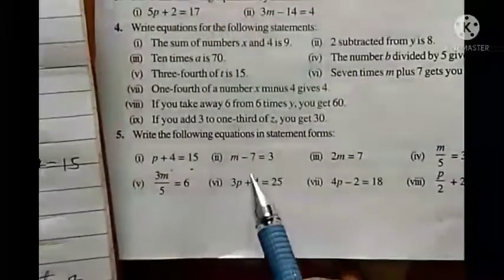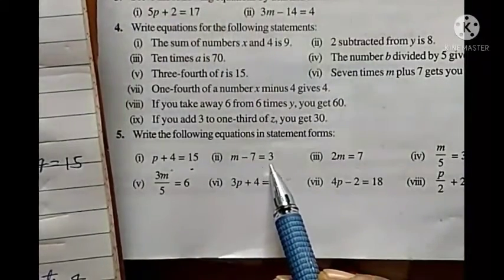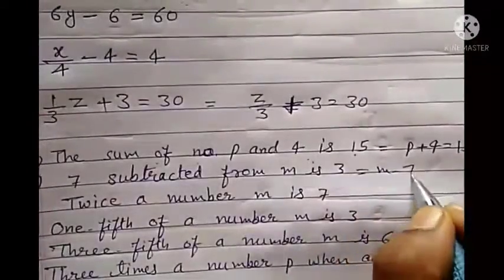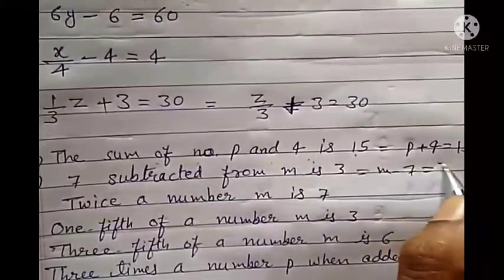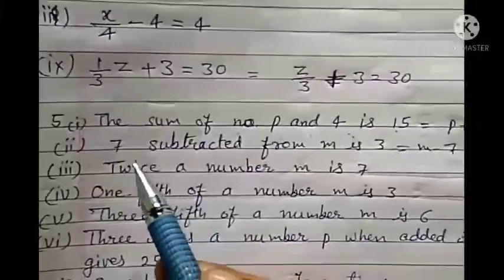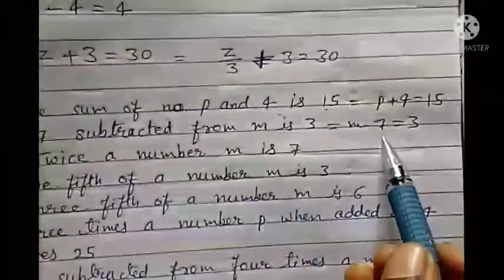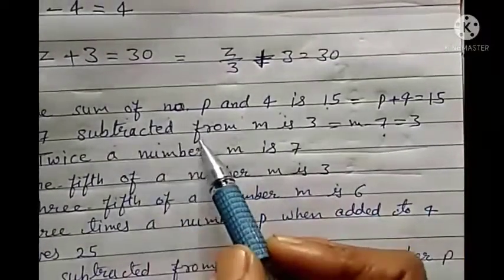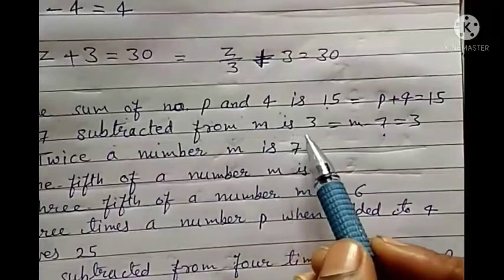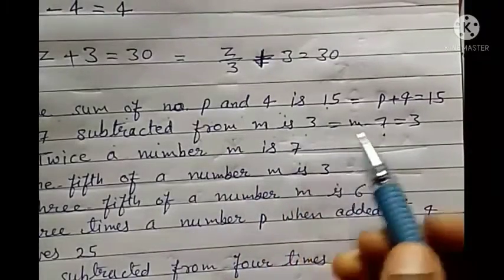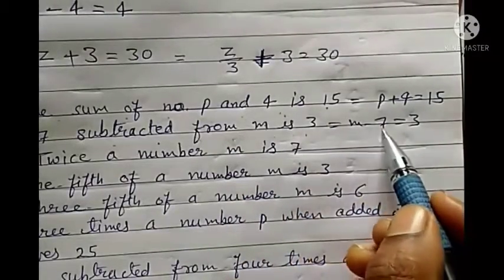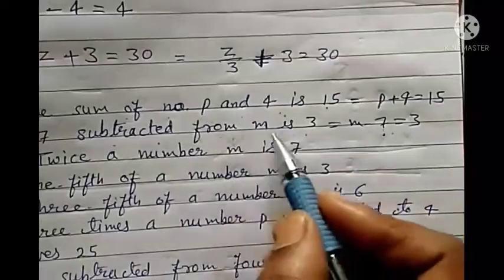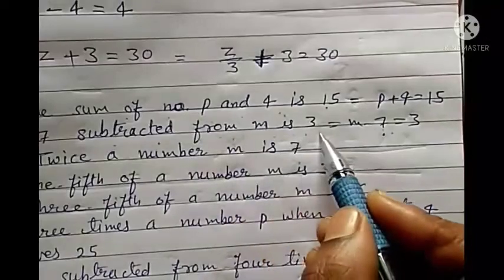Second: m minus 7 equals to 3. Written as a statement: 7 subtracted from m is 3, or 7 taken away from m is 3.